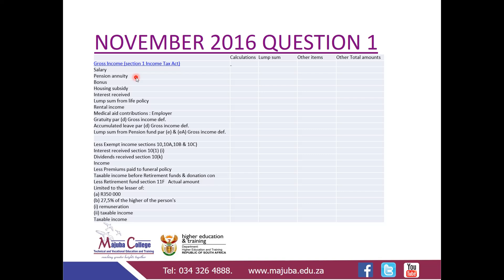We're going to start by taking what we call gross income. Gross income is defined in Section 1 of the Income Tax Act. All your potential income items — that is, items that are considered to be income items for Tiptoe — are likely to be classified as gross income. Remember, if they're capital in nature, they won't be included in your other column. However, in the description column, we're going to include all potential income items, regardless of whether they are capital or revenue in nature.